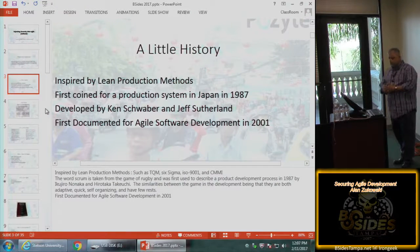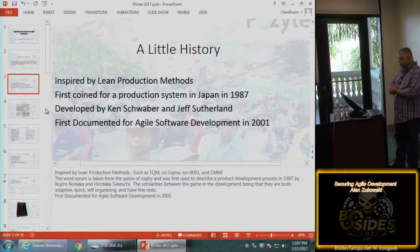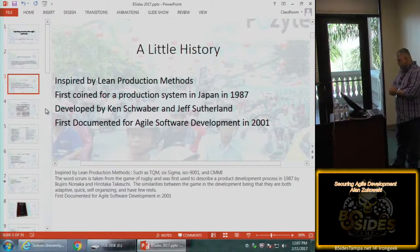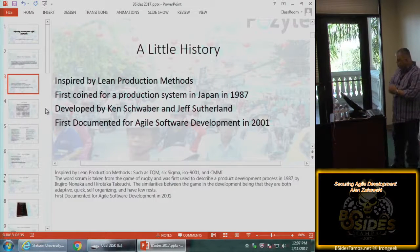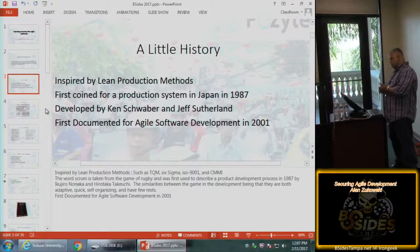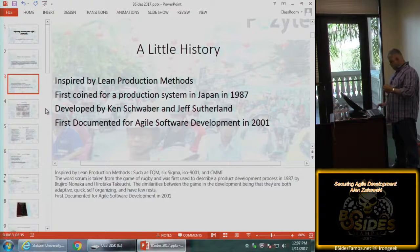A little history behind Scrum: it's inspired by Lean Production Methods. The term was first coined for production systems in Japan in 1987. It was developed by Ken Schwaber and Jeff Sutherland, and was first documented in a book called Agile Software Development in 2001.